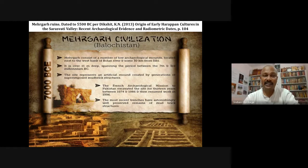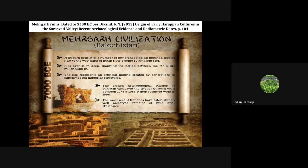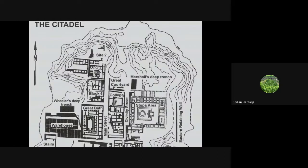Mehgarh civilization is also called the oldest civilization, mentioned as around 7000 BC and somewhere as 5500 BC. It is described as the origin of early Harappan cultures in this valley, with radiometric dates to support this.